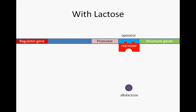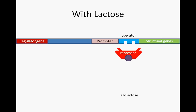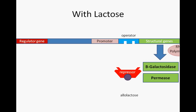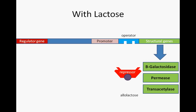In the presence of lactose, allolactose, an isomer of lactose, binds to the repressor molecule and causes it to change shape. In its new conformation, the repressor molecule cannot bind the operator. With the operator free, RNA polymerase is free to bind the promoter and proceed with transcription of the structural genes. In the end, beta-galactosidase, permease, and transacetylase are produced and utilized to break down lactose for the cell to use.